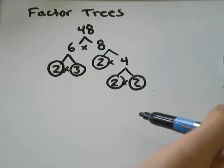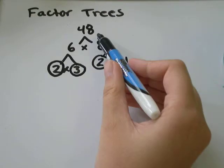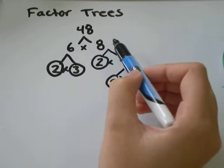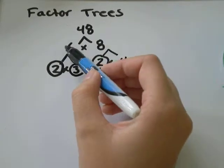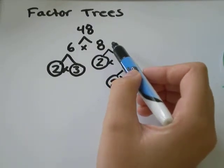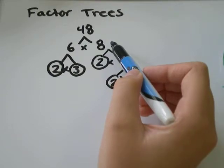Now, there's more than one factor tree that would be right. Instead of 48 being 6 times 8, you could have said that it's 2 times 24. You would have got a different tree, but it would still be correct.